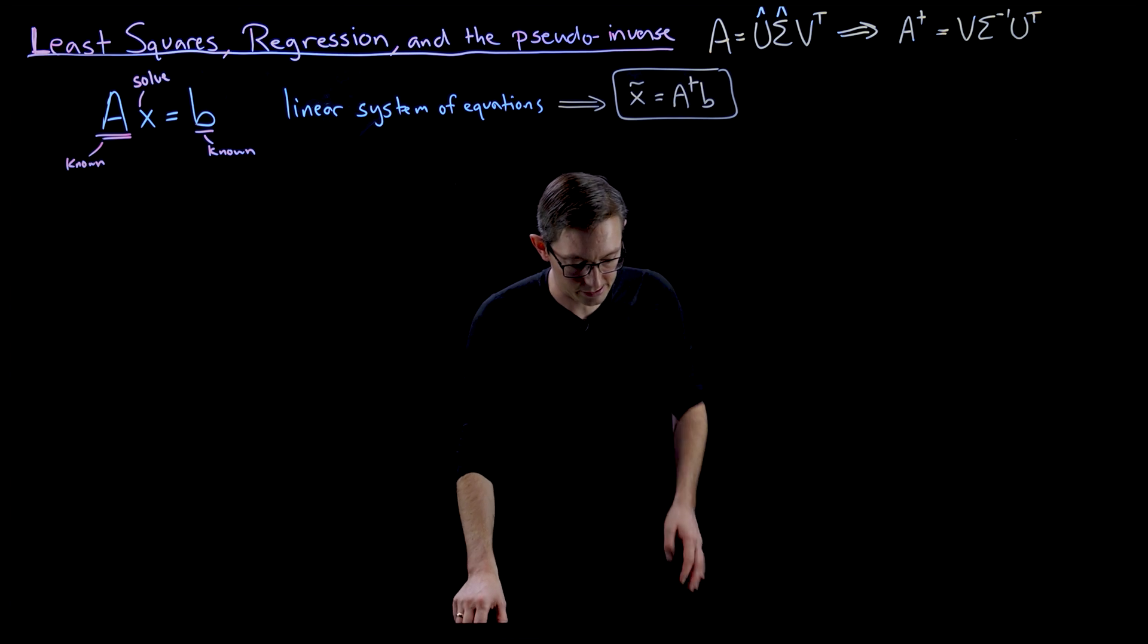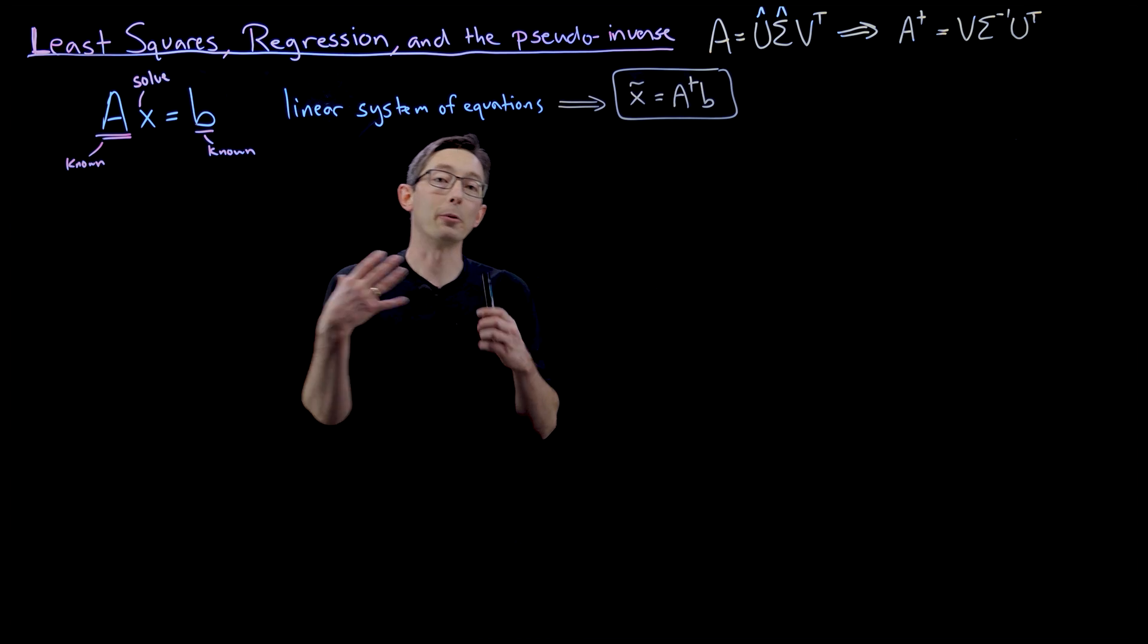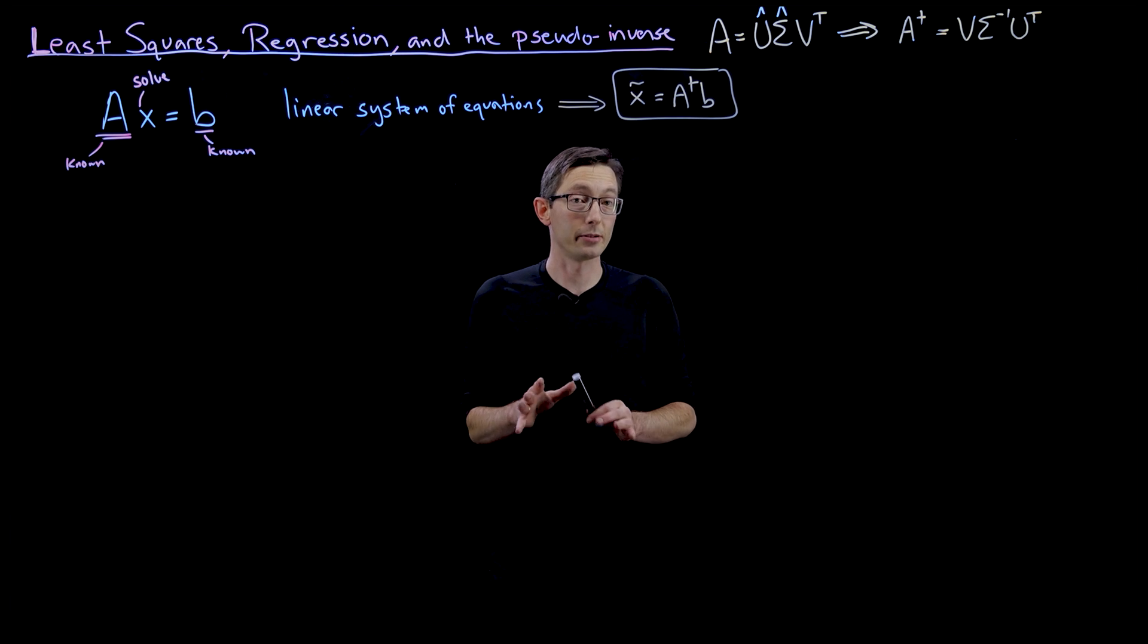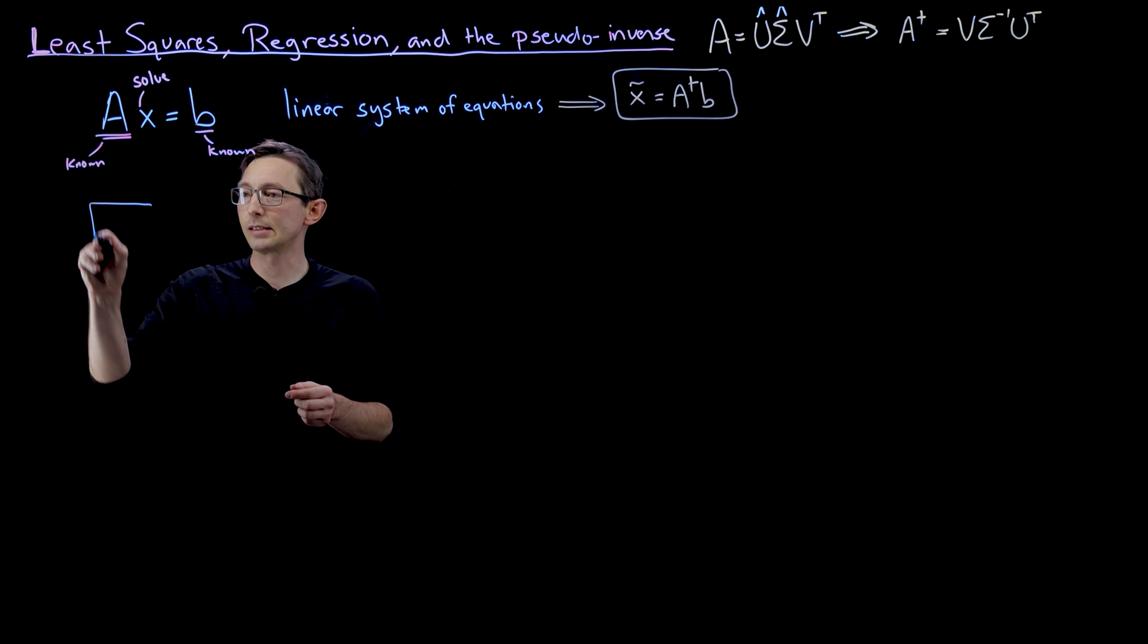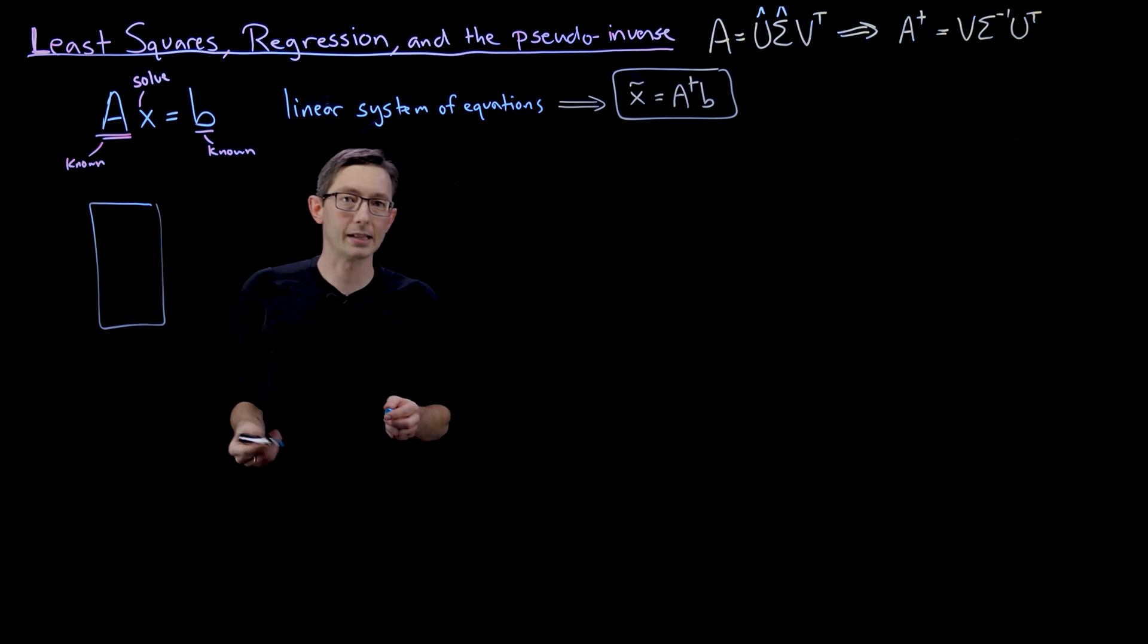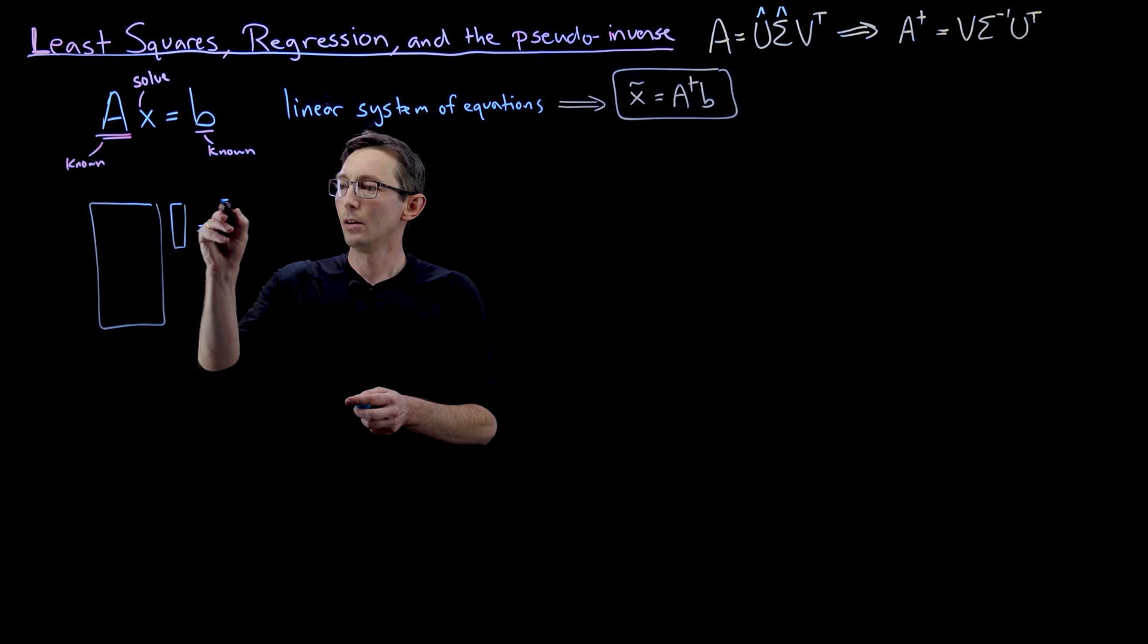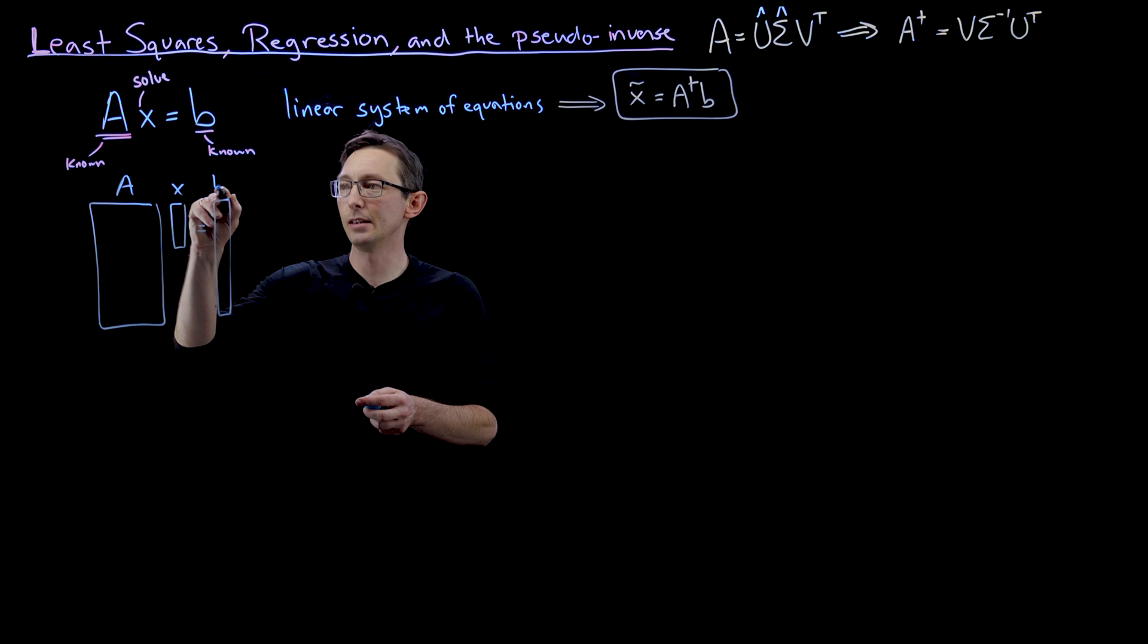So I'm going to walk you through this and we're going to talk about how you would compute this. And we're actually going to run a couple of code examples on real data to play around with these regression models. So the idea here is that I might have some matrix A, and I'm going to draw it as a tall skinny matrix A, times a vector X would equal some output B. So AX equals B.